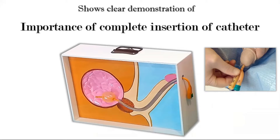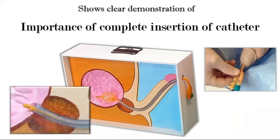Once students come to know about the location of the balloon, they will understand why it is important to introduce the catheter completely in the male urethra before inflation of the balloon. Unfortunately, many students carry a misconception that the balloon should be inflated as soon as urine starts flowing out of the catheter. But this model will show them how dangerous this mistake could be — they can clearly see that when the tip and eye of the catheter are inside the bladder, the balloon is still inside the urethra.